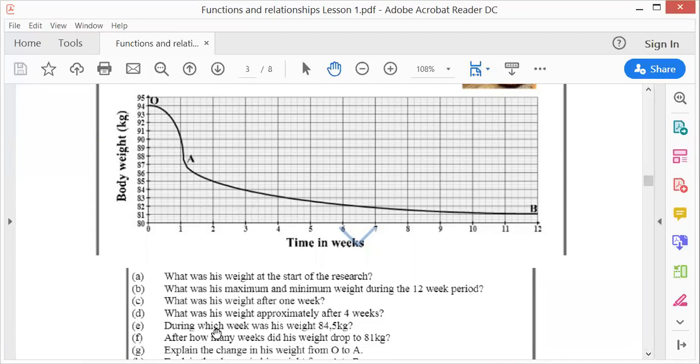During which week was his weight 84.5? 84.5 is about there. I go up and down. Ah, so it's there. Just after two weeks. That means it was within just after two weeks. So it's within the third week. Because you can't say second week. It's already gone. I mean, there's the first week, second week. So it must be within the third week.